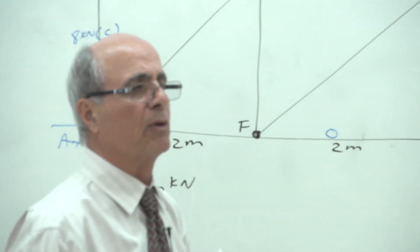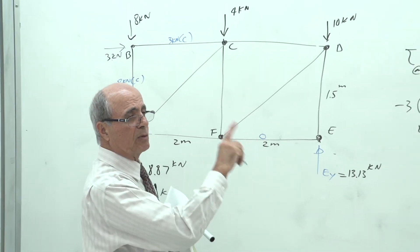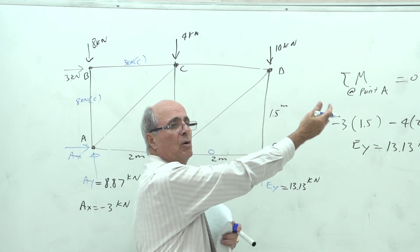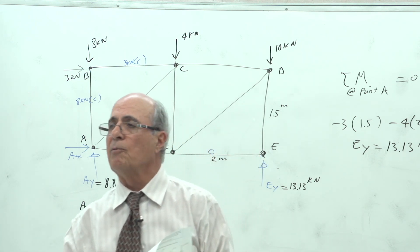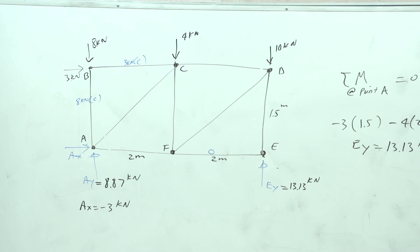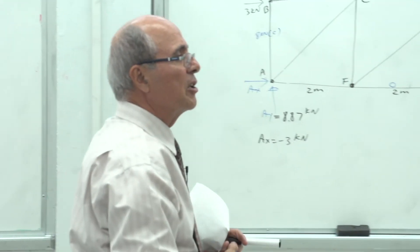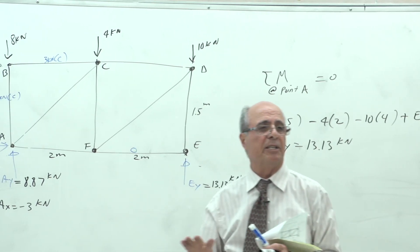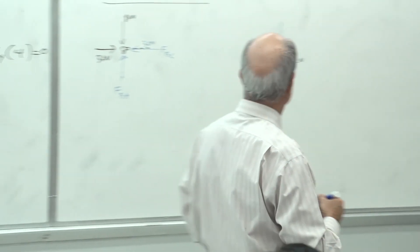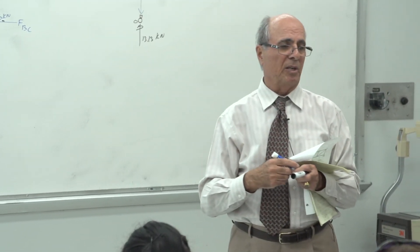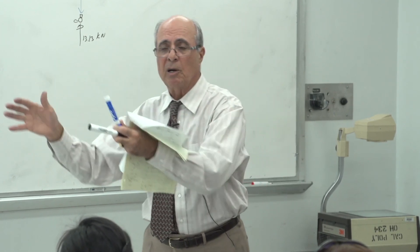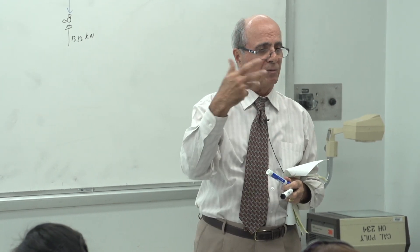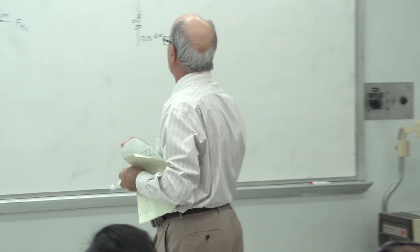Don't remove zero-force members from the design. In reality, the wind might come from the other direction, so you design for multiple load cases. A member that carries zero force now may carry force under a different loading scenario — such as earthquakes or wind from the opposite side. So always keep zero-force members in the structure for stability and alternate loading.